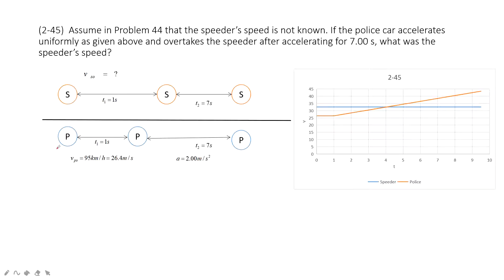And then, at this time, the police, the initial velocity is still 26.4 m per second. At the first second, this is reaction time, the police moves at a constant velocity to this position and the speeder also moves constant velocity Vs0 to this position.